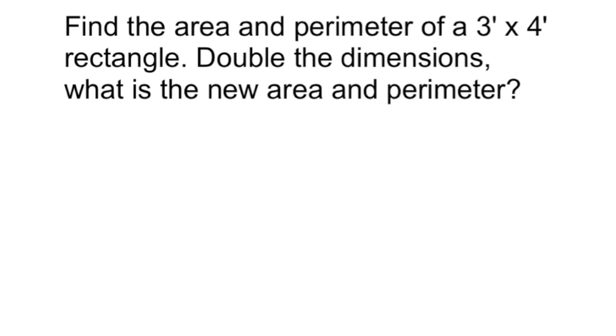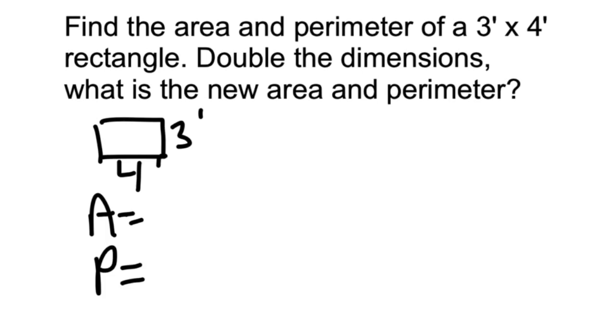Find the area and perimeter of a three foot by four foot rectangle. Double the dimensions. What is the new area and perimeter? So here's the rectangle three feet by four feet. The area is the base times the height so three times four is 12 feet squared.